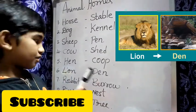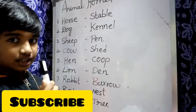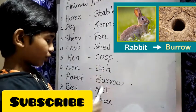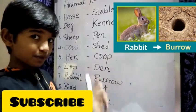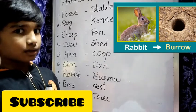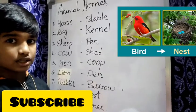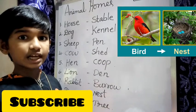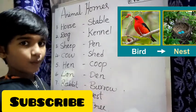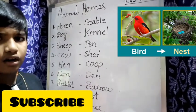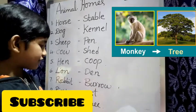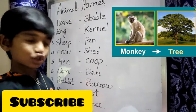Now next picture — what is that picture? Yes. Rabbit. Rabbit lives in a burrow. Next picture — what is that picture? Yes. Bird. Bird lives in a nest. Next picture — what is that picture? Yes. Monkey. Monkey lives on the tree.